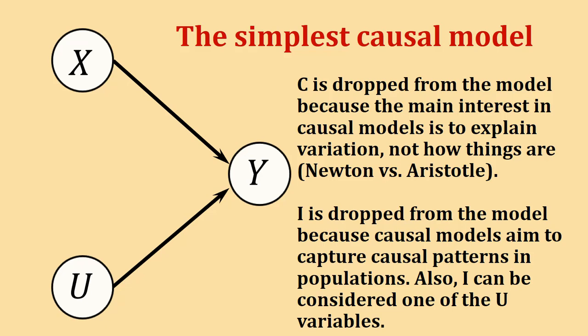Variable i is dropped from the model for two reasons. Mainly, we need to work with populations or samples that belong to populations — we don't work with individuals. Also, we can consider i as part of u. For example, the genetic structure of individuals could be one of the unknown variables. We don't know what genes affect y, so what part of i has an actual effect on y we don't know, and it could be part of u.